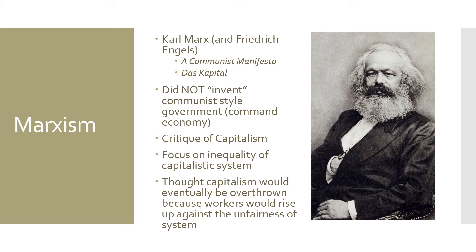What Marx thought was that workers would establish a communist system where everybody would be treated equally and there would be no inequality of wealth at all — essentially a zero on the Gini index. Marx said almost nothing about how this would happen or what a state would look like after it. In fact, he actually thought the state itself was a tool of capitalism and that the state would wither away, leaving a global utopia where all the workers participated in their own wellbeing and the shared wellbeing of everyone.